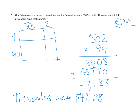One last thing — in our classroom we would do a quick estimate to check if we're in the right realm. If we call this about 90 vendors, and about $500 in profit, we'd say 9 tens times 5 hundreds equals $45,000. And $45,000 is pretty close to $47,188, so I'm confident our answer is accurate. Thanks for joining me for another episode of Mr. Kong Has Problems. I will see you again next time. Bye-bye.